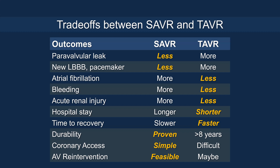There are some trade-offs with SAVR versus TAVR. Paravalvular leak, pacemaker, and left bundle branch block are certainly less with surgery. But TAVR is superior in terms of fewer incidents of AFib, bleeding, acute renal injury, shorter hospital stay, and faster recovery. Of course, TAVR has less known durability compared to surgery. However, coronary access and aortic valve re-intervention may be more challenging and difficult with TAVR versus SAVR.